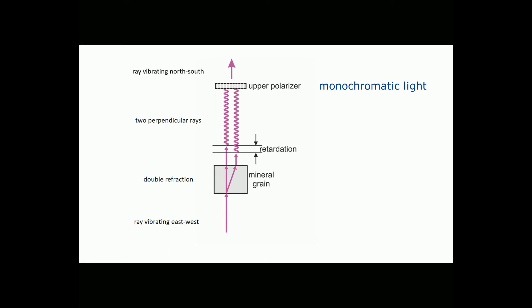When the two rays get to the upper polarizer, some optic magic takes place. The upper polarizer lets their north-south components pass through while blocking their east-west components. The filter absorbs the east-west vibrations of the light, and above the upper filter, the waves are now vibrating in the same plane and so they can interfere.